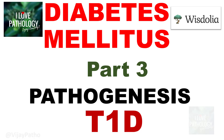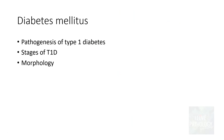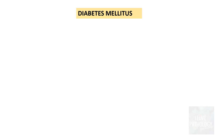If you recollect in the earlier sessions, in part 1 I had discussed the classification of diabetes mellitus and in part 2 we discussed in detail about glucose homeostasis. In this session, let us learn about the pathogenesis of type 1 diabetes mellitus in particular. We will see what are all the stages and a bit about the morphology of type 1 diabetes mellitus.